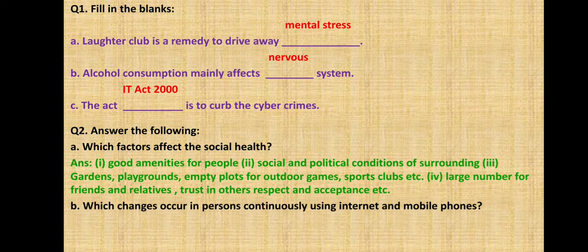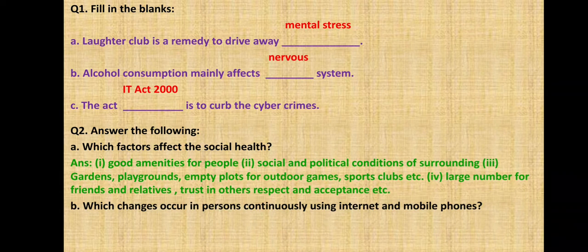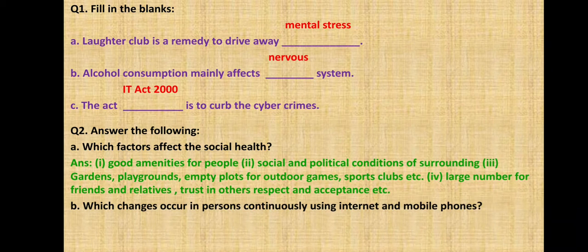The fourth factor is having a large number of friends and relatives, trust in others, respect and acceptance. If you have a large number of friends and relatives you will never feel loneliness. When you have trust in others, respect for others, and acceptance, then definitely your social health is going to be very good. You have to elaborate all these headings and write.